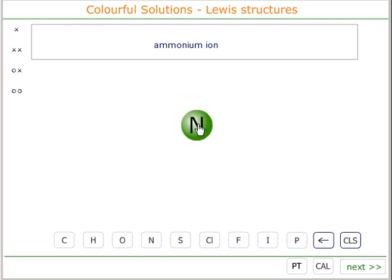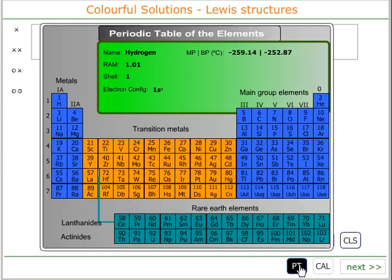So we take out one nitrogen. We can take out one, two, three, four hydrogens. Now nitrogen is in group five of the periodic table, so it's got five electrons in its outer shell.